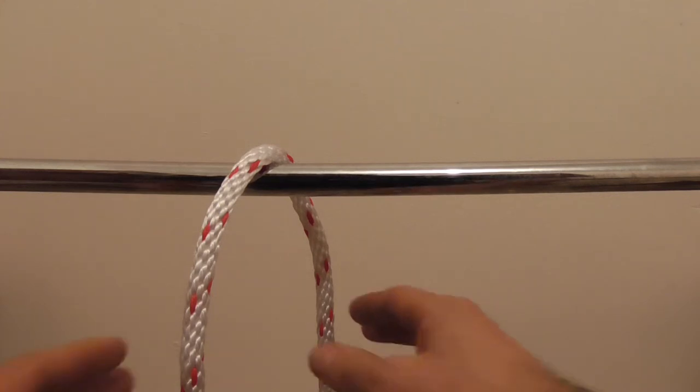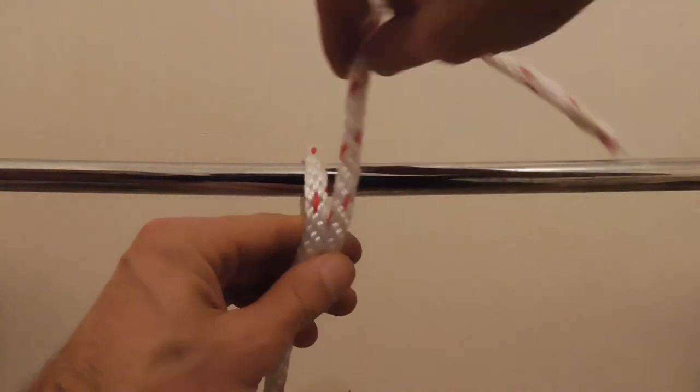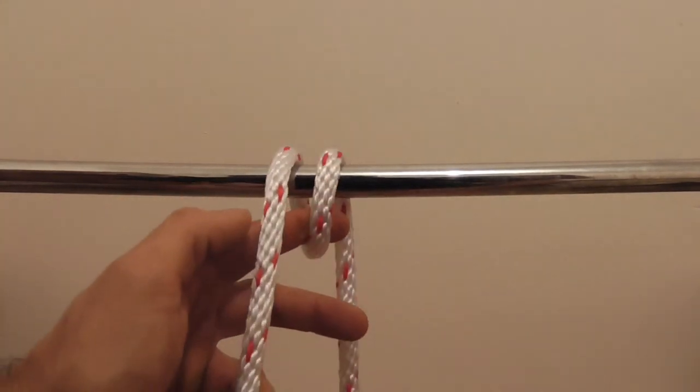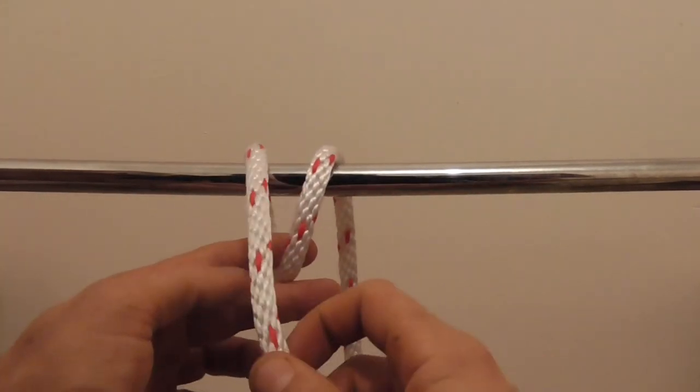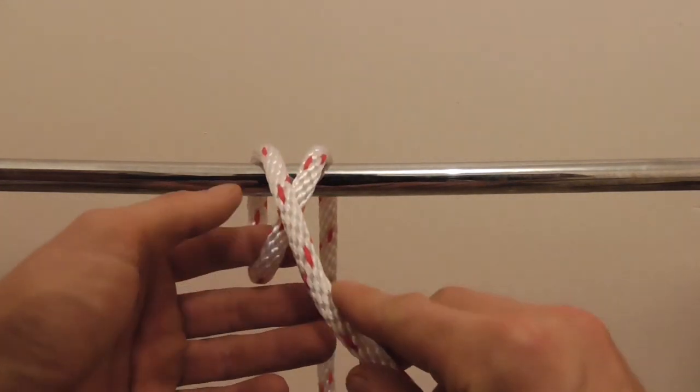To tie this knot, take the rope and throw it over the object once, then take it around again for a round turn, and cross the standing part over.